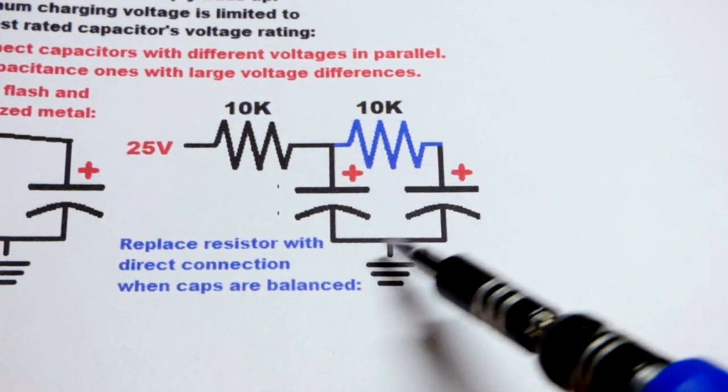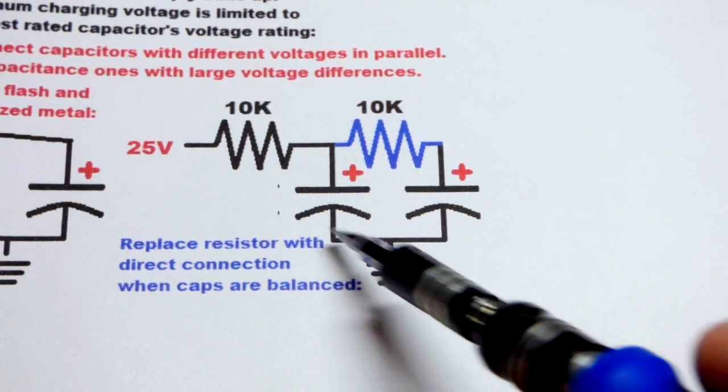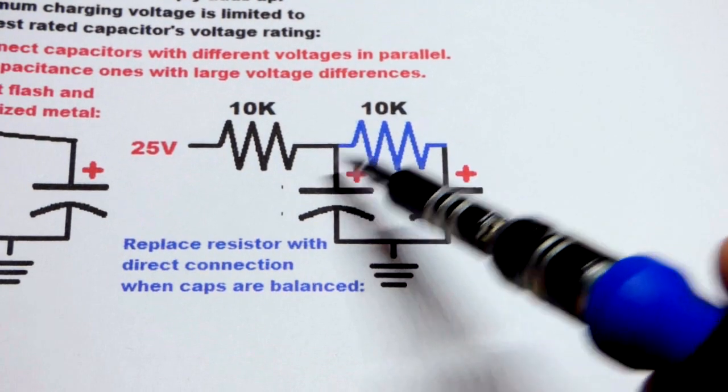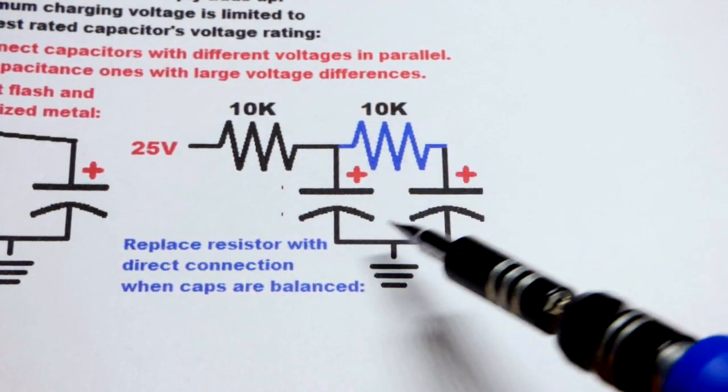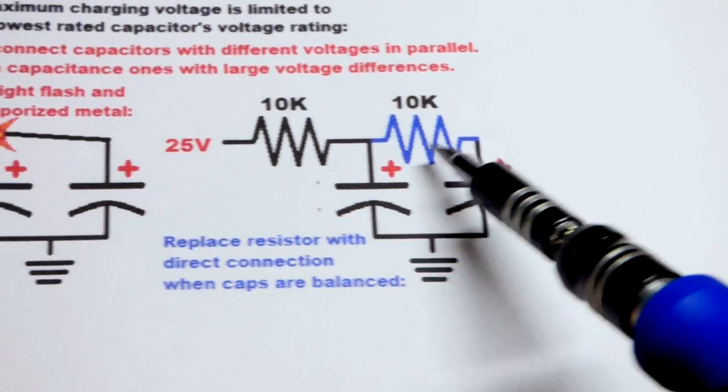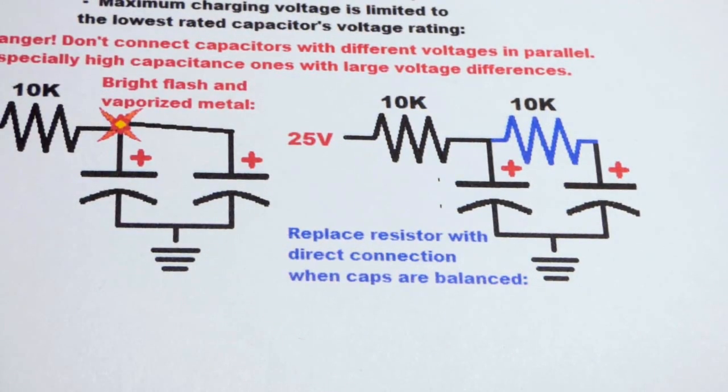And a good way to do that is beforehand, again, you can connect one side, or you could connect that side, but it's usually better to connect ground first. And then, you could use a resistor, a fairly high value resistor, until they equalize. And then, you can substitute that resistor with a jumper. Once they're equalized, no problem.